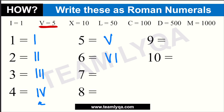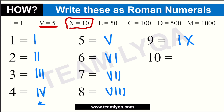Next we have 7, which is written as VII. 8 is VIII — V plus three I's. Then 9: because 9 is 10 minus 1, and X is 10, we write it as IX, which is 10 minus 1 equals 9. And 10 is just X.